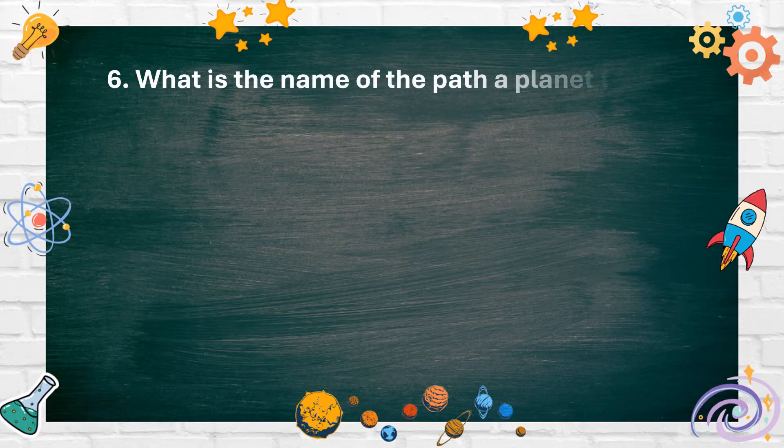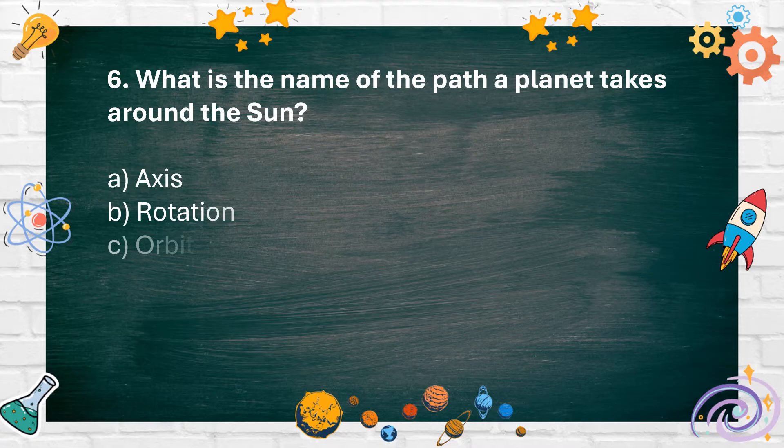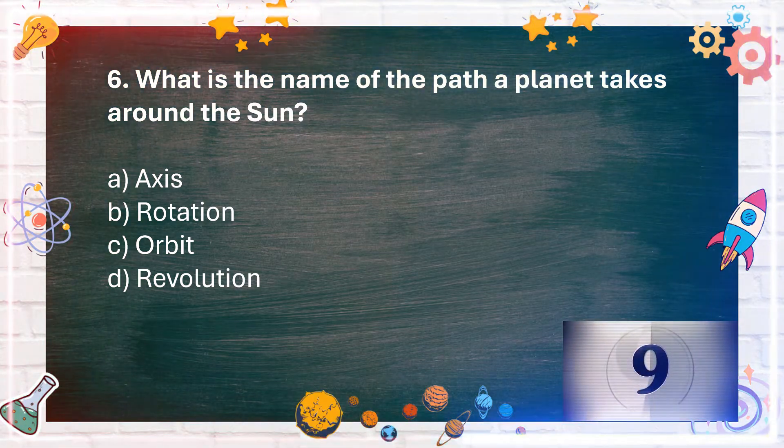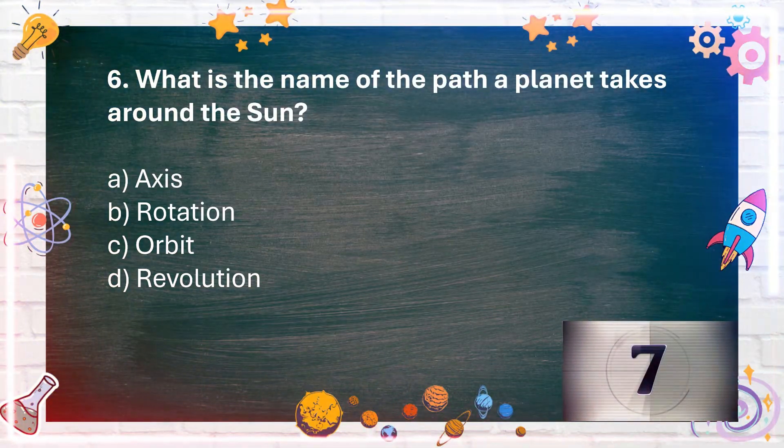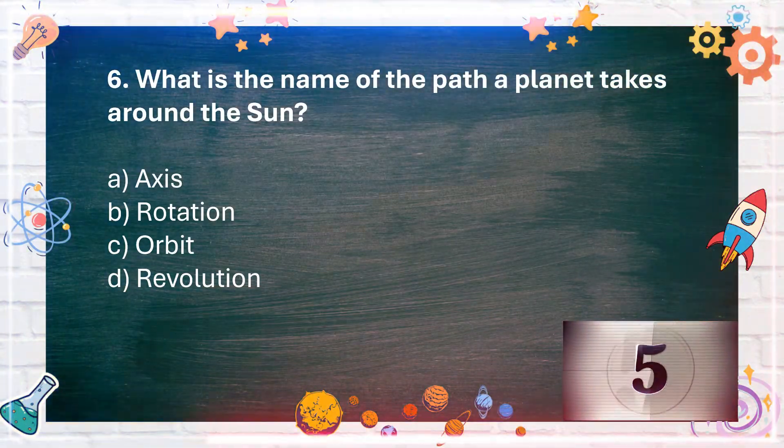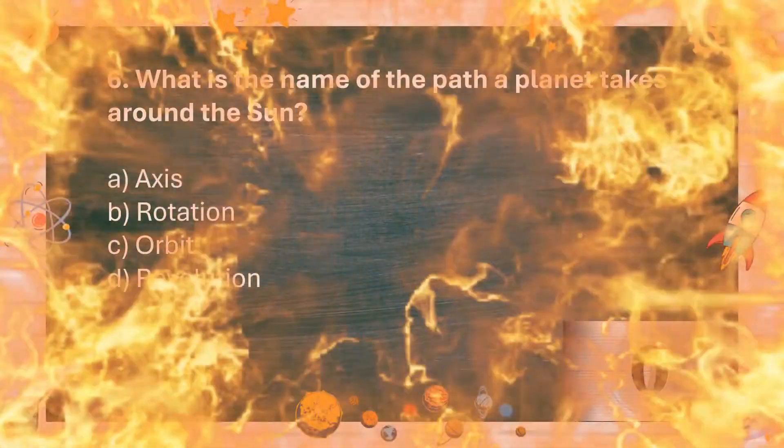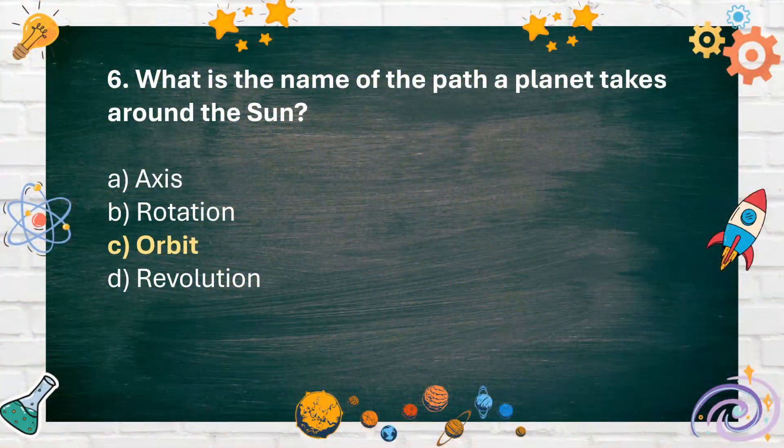Number 6: What is the name of the path a planet takes around the Sun? A. Axis, B. Rotation, C. Orbit, D. Revolution. The answer is C. Orbit.